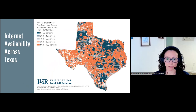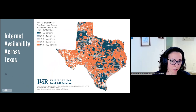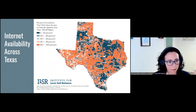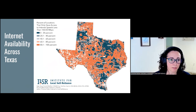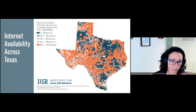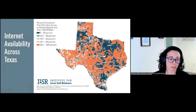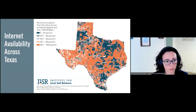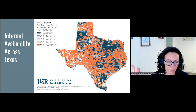Zooming in on Texas, I've taken that location-level data and aggregated it at the census block level. This illustrates the percent of locations per census block that only have access to speeds less than 100 over 20 megabits per second. Orange colors mean there are a lot more locations that need better service — which covers a large swath of Texas. The more blue areas are where you've got greater population density. These areas in orange desperately need better connectivity.